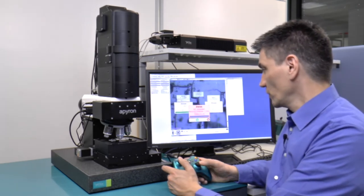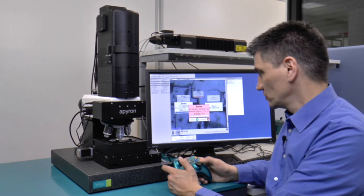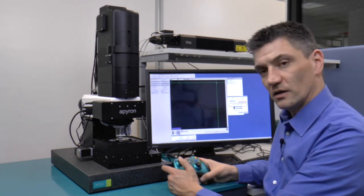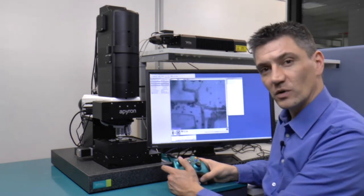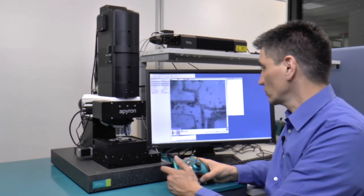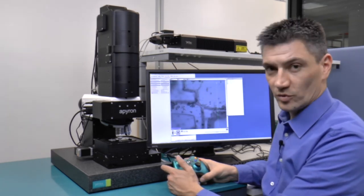If we go further to the 100x objective, we again see it does an automatic compensation for the XYZ and adjusts the illumination to be in focus exactly on the same position as before.